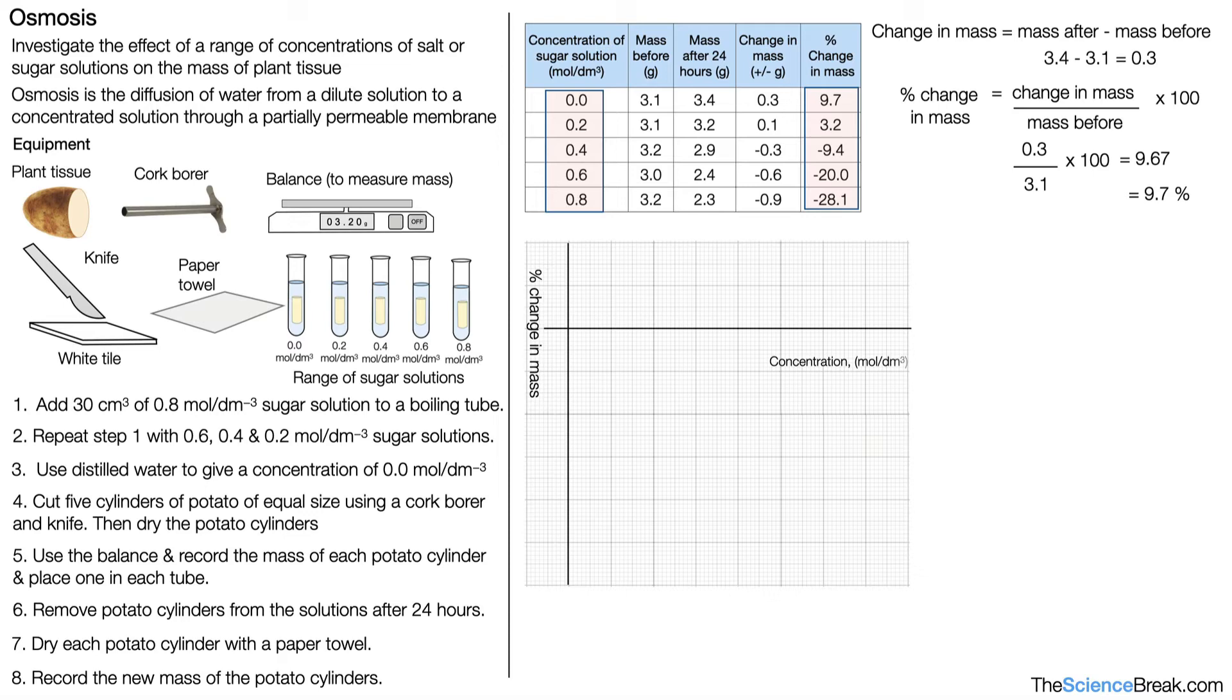The percentage change in mass goes on the y-axis and the concentration goes on the x-axis. Once we've got those, we can add our numbers evenly spaced for graphs, and then we can plot our points. There are our points plotted for the different concentrations, and we can join those points up with a line.